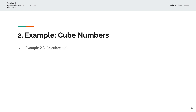In the third example, we're asked to calculate 10 cubed, or 10 to the power of 3. So 10 cubed is equal to 10, multiplied by 10, which is itself, and then multiplied by 10, which is itself again. And that gives us 1000.